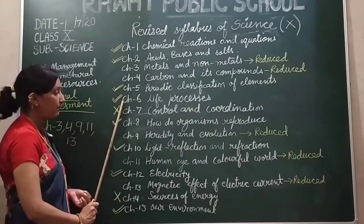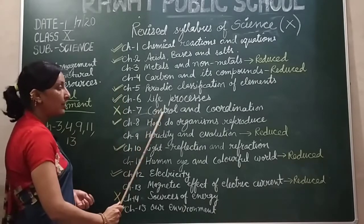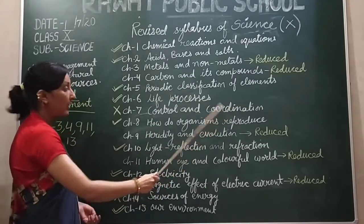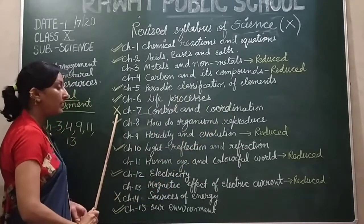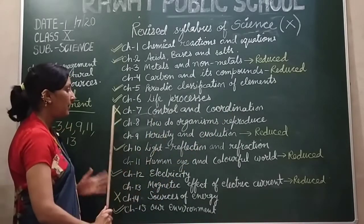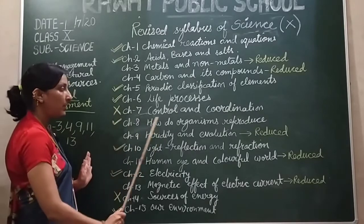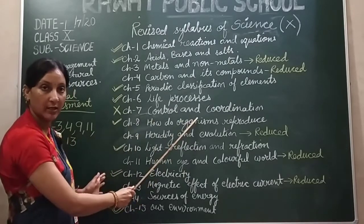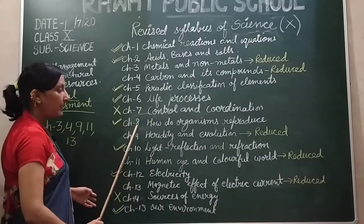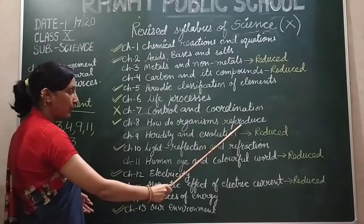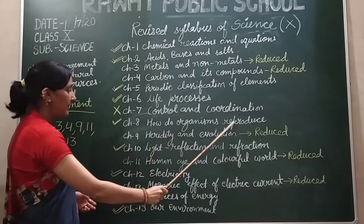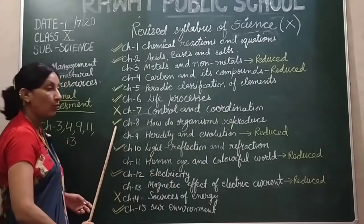Chapter number 7, Control and Coordination — the biology portion is completely removed. There is no change to the remaining content. Chapter number 8, How Do Organisms Reproduce? — as it is, there is no change.